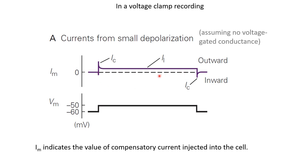Between the pulses, capacitive current is zero. At the resting membrane potential, leakage currents were zero, but when the membrane becomes more positive, the difference between the membrane potential and the equilibrium potential of leakage channels increases — leakage currents flow out, so the compensatory current flows in as a constant positive value corresponding to the magnitude of leakage currents. If we ignore voltage-gated conductances, the compensatory current profile shows a sharp positive pulse, then a constant positive value for leakage, then a sharp negative pulse.